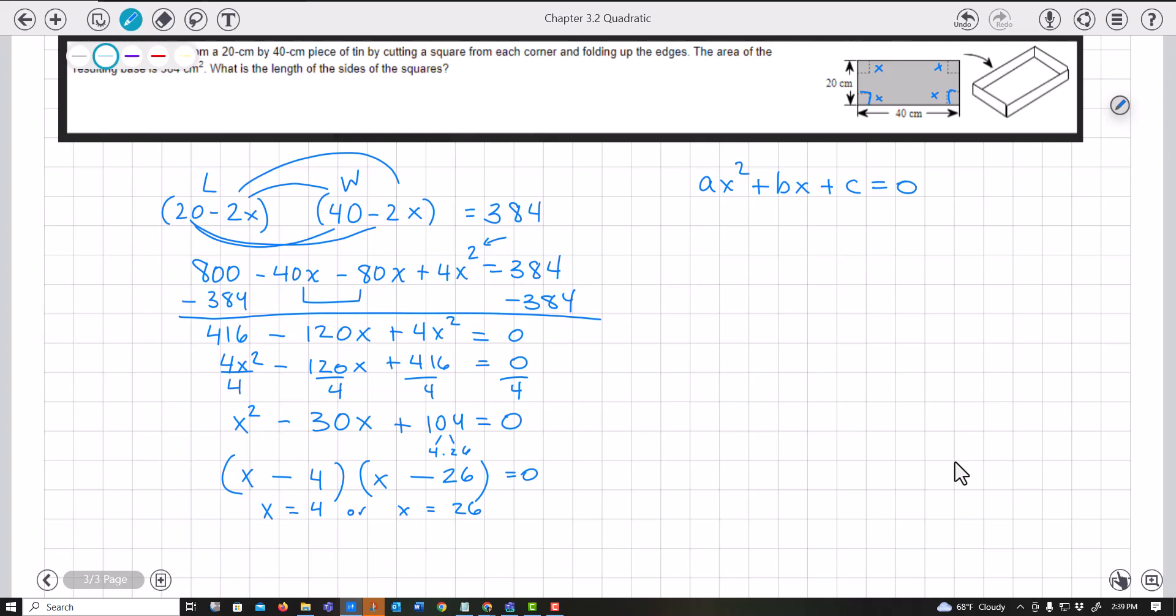You have to logically think about this. For the length, if you plug in 4, you get 20 - 2(4) = 12. For the width, plugging in 4 gives 40 - 2(4) = 32. But what about 26? Try it.